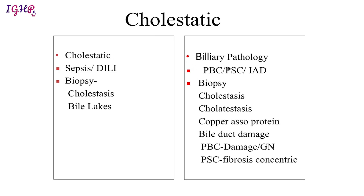Biliary pathology is when the etiology of cholestasis can be pinpointed to a bile duct pathology; this is seen in primary biliary cirrhosis (PBC), primary sclerosing cholangitis (PSC), or idiopathic adult ductopenia. In biliary pathology the biopsy shows features of cellular and canalicular cholestasis, plus cholate stasis caused by accumulation of bile acids in periportal hepatocytes. These hepatocytes appear enlarged with ballooning-like degeneration since bile acids are colorless. Copper-associated proteins are seen on orcein stain. For PBC there is non-caseating granulomatous destruction of bile ducts; for PSC there is onion-skin or concentric fibrosis of the bile duct.